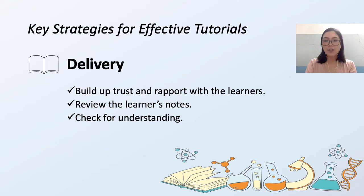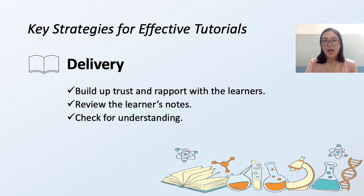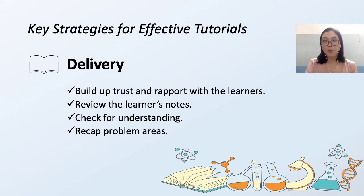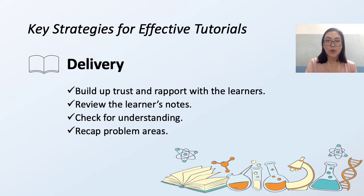When explaining a difficult or new concept, we must go slow. We must give our learner time to process the new information and try to explain concepts at a level they will understand. If our learners are facing specific problems from previous sessions, we must recap those areas. We can also identify problem areas by reviewing old tests or previous assessments. If we set them any homework, we can run through their answers to make sure they have clarified their knowledge, then move on to the next topic.